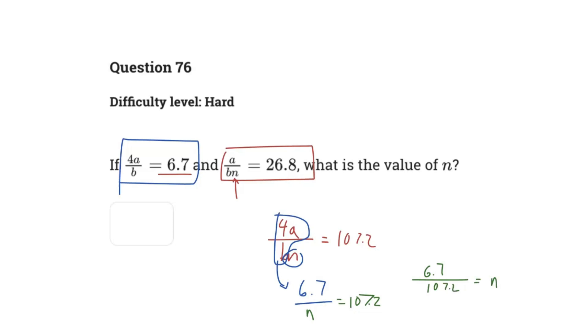And 6.7 over 107.2 also just simplifies to 1/16, and therefore our value n is 1/16.